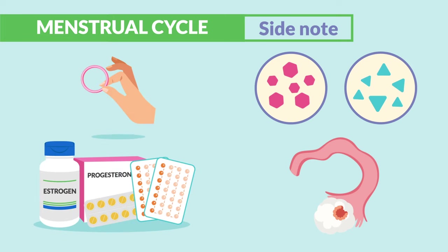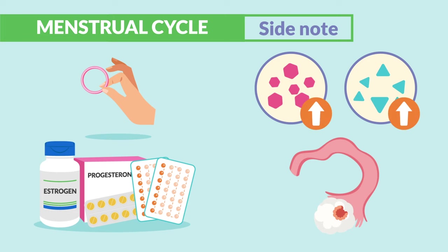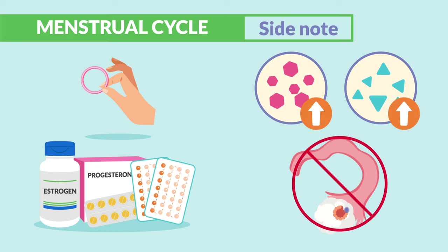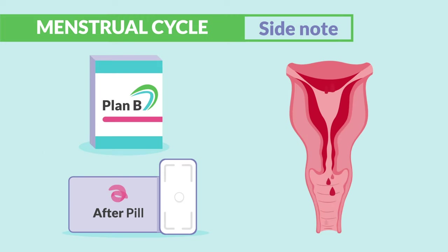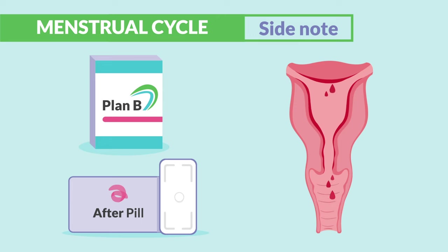Birth control, like oral contraceptives or even the ring, works by keeping estrogen and progesterone high in order to control ovulation and prevent fertilization. And Plan B, or the morning-after pill, is used for emergency contraception. It works by shedding the inner lining of the uterus — the endometrium — so that a fertilized egg cannot attach and grow into a fetus.